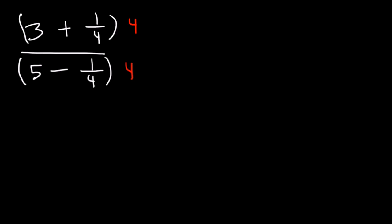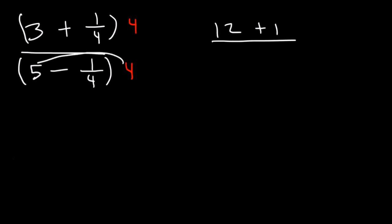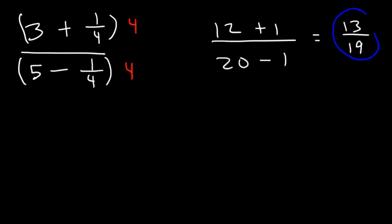So let's distribute the 4. 4 times 3 is 12. And 4 times 1/4 — that's 4 divided by 4 — that's 1. And then 5 times 4 is 20. 4 times 1/4 is 1. 12 plus 1 is 13. 20 minus 1 is 19. And so that is the answer.